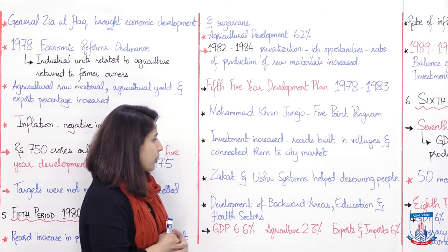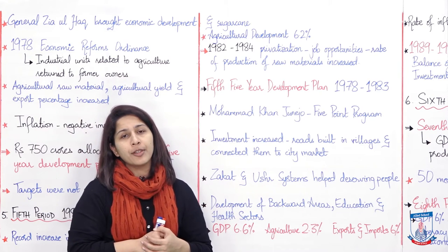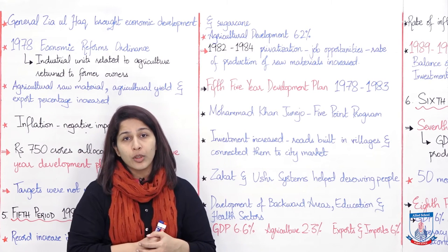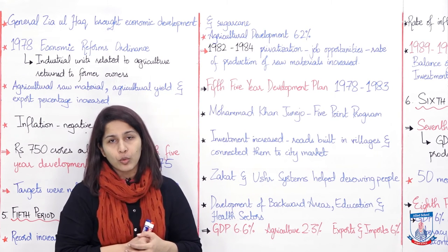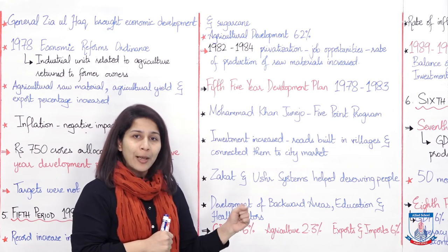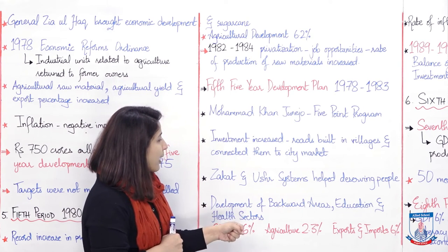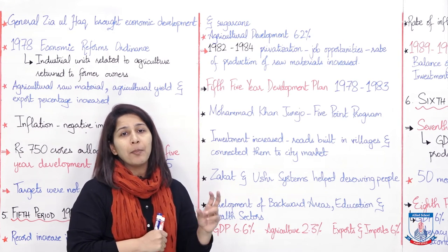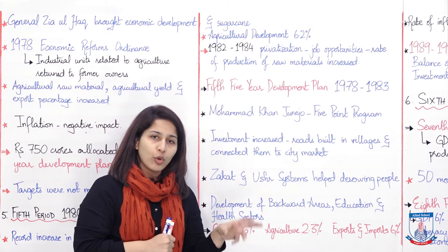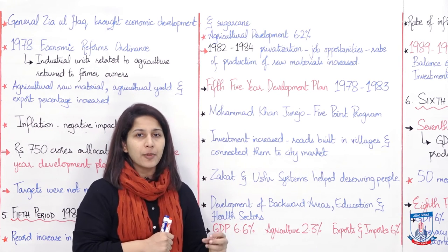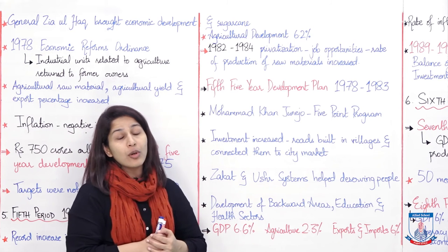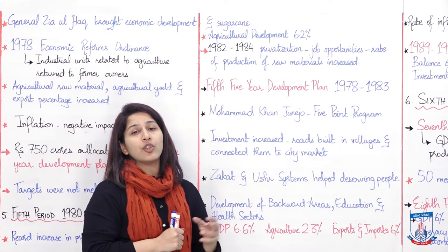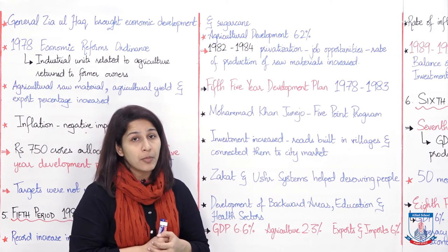The Zakat and Ushr systems helped deserving people — those who were rightful recipients and needed basic necessities of life were assisted. Then came development of backward areas: roads were built, development came to other sectors, and attention was given to the education and health sectors, which had perhaps been neglected until then. When importance was given to these sectors, improvement in the literacy rate also became visible.